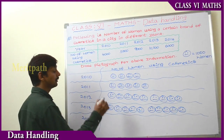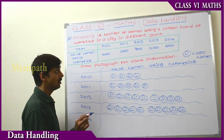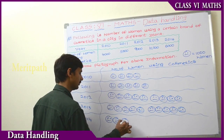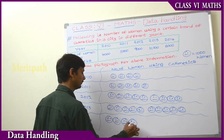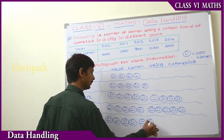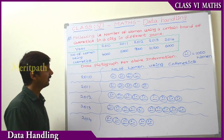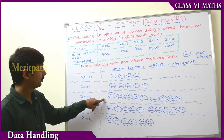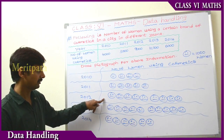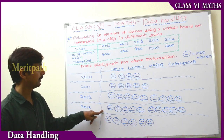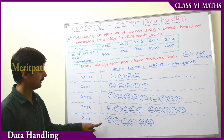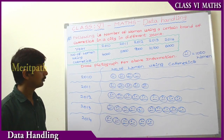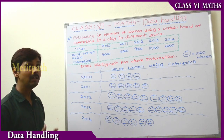In 2014, 6,000 women are using cosmetics, so we need to draw 6 pictures. So finally: 2010 has 4 pictures representing 4,000; 2011 has 5 pictures for 5,000; 2012 has 9 pictures for 9,000; 2013 has 10 pictures for 10,000; and 2014 has 6 pictures for 6,000. This is the pictograph. Now let's move on to the bar graph.